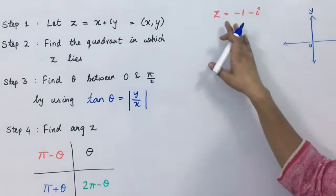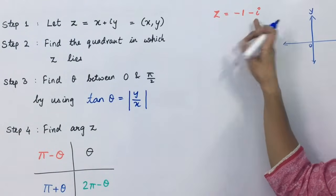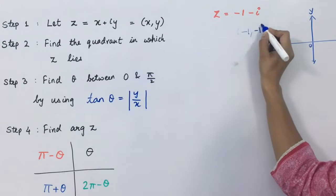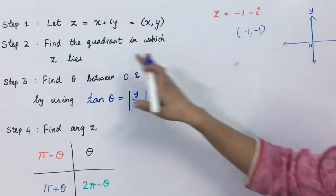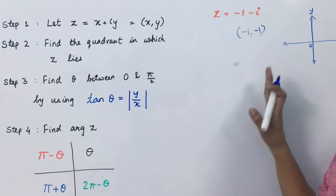We have to find the argument of z where x is minus 1 and y is also minus 1. This is equal to minus 1 and minus 1. Now what you have to see is, as the rule says, find the value of z which is in which quadrant we can lay it.